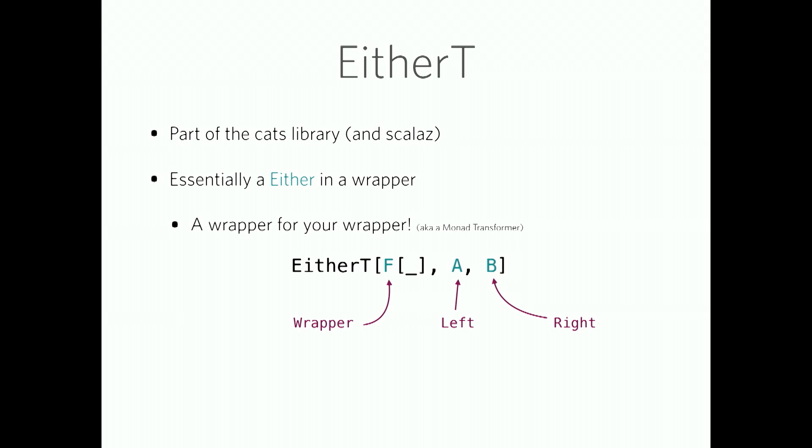So, these let you combine two wrappers. For example, a future and an either. The either is always present because it's an either T, but the other wrapper can be anything else. You could use lists, I'm using futures. It's part of the cats library, and it's also part of the ScalaZ library.